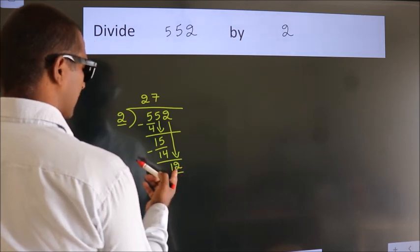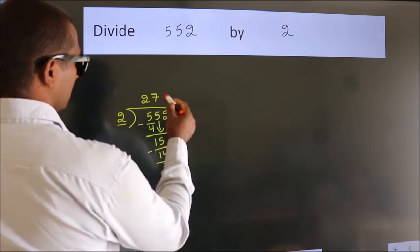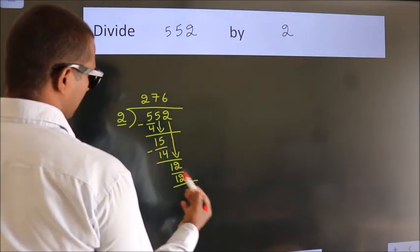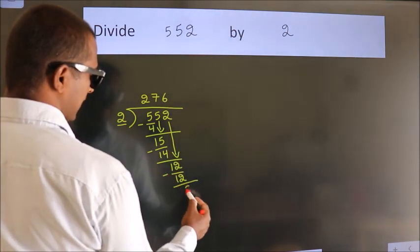When do we get 12 in the 2 table? 2 times 6 is 12. Now we subtract. We get 0.